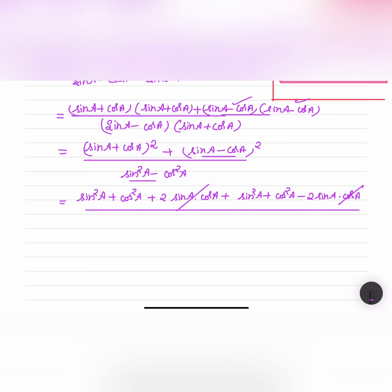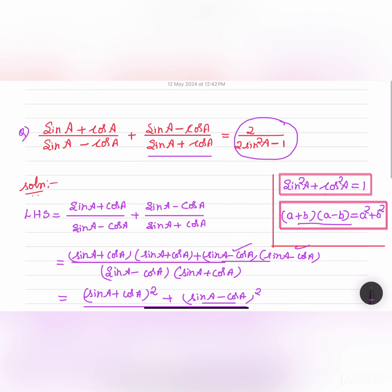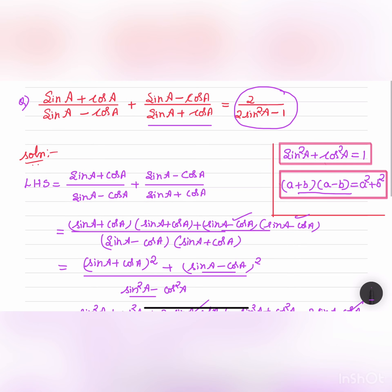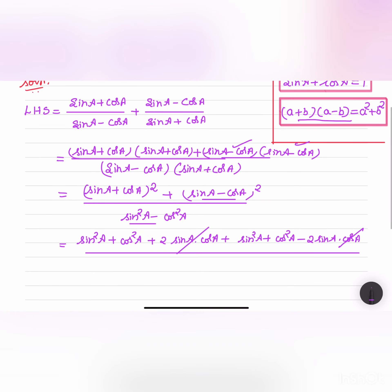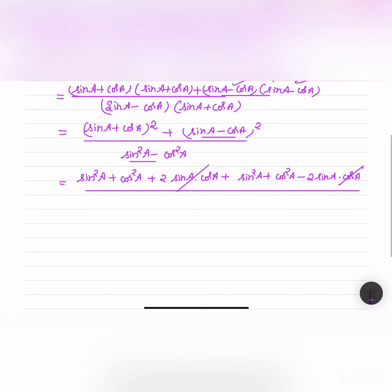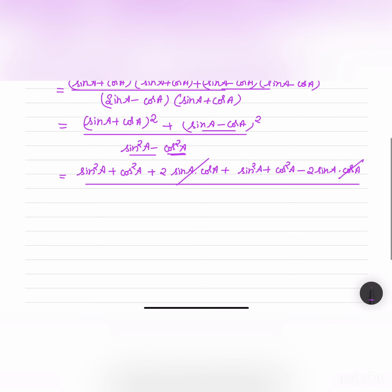In the RHS part we have 2 sin²A. So we convert cos²A in the denominator to sin²A: sin²A - (1 - sin²A), since cos²A = 1 - sin²A.